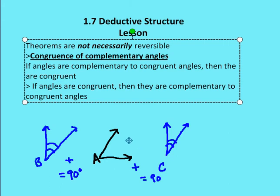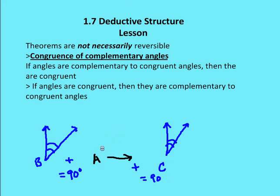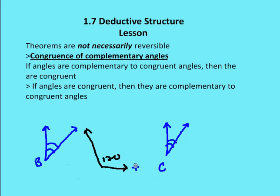Now this doesn't mean that if angles are congruent, then they are complementary to a given angle or to congruent angles. So let's take the eraser and change A to 120 degrees. Now I have two angles, B and C, which are congruent. So angle B is congruent to angle C. However, this doesn't necessarily mean they're complementary to A. Since A is already 120 degrees, B and C cannot be complementary to A — because by definition, complementary angles A and C, and A and B, would add up to 90 degrees.